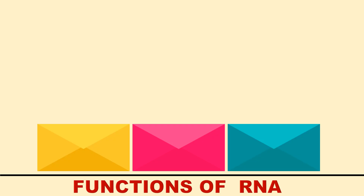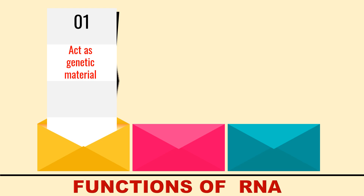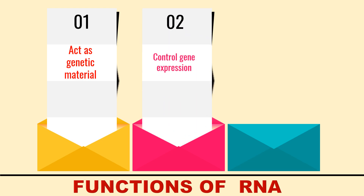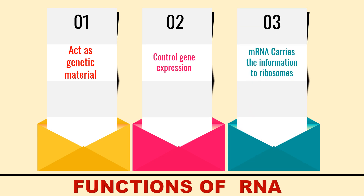Regarding the functions of RNA: first, RNA acts as genetic material in certain viruses — for example, the tobacco mosaic virus has RNA as its genetic material. Second, RNA is involved in the control of gene expression; for example, microRNA and siRNA (small interfering RNA) are involved in gene expression regulation. Third, messenger RNA carries the genetic code — containing information for protein synthesis — from the nucleus to the ribosome.